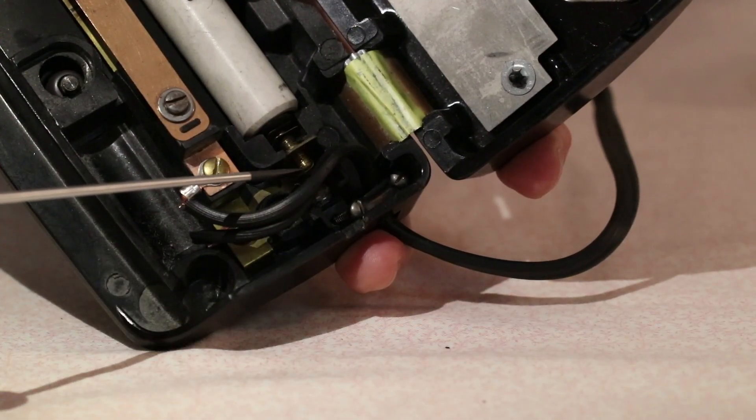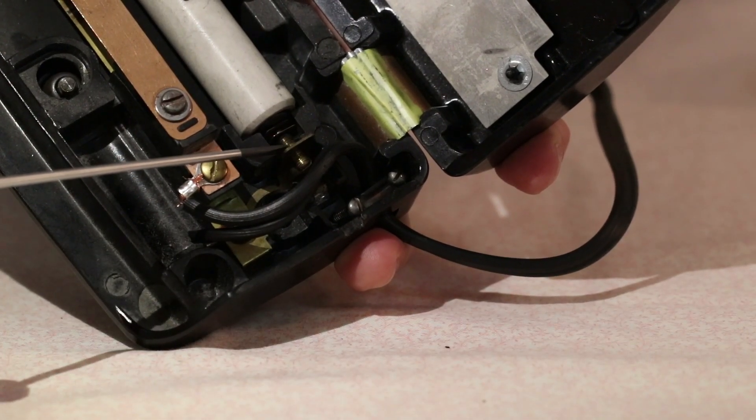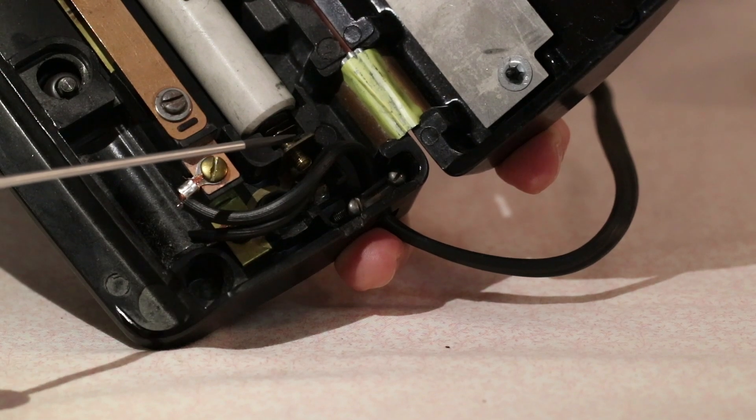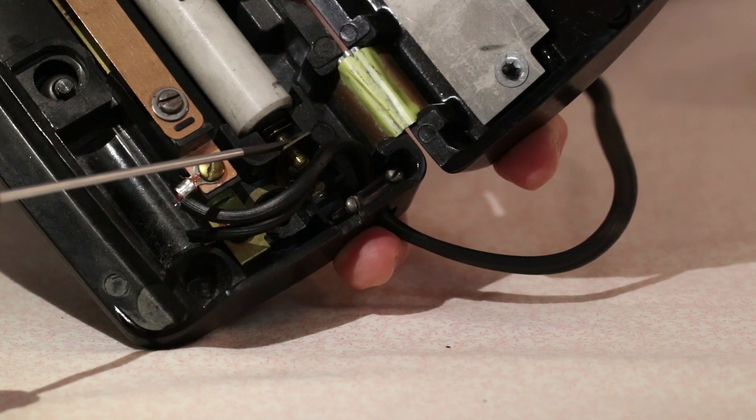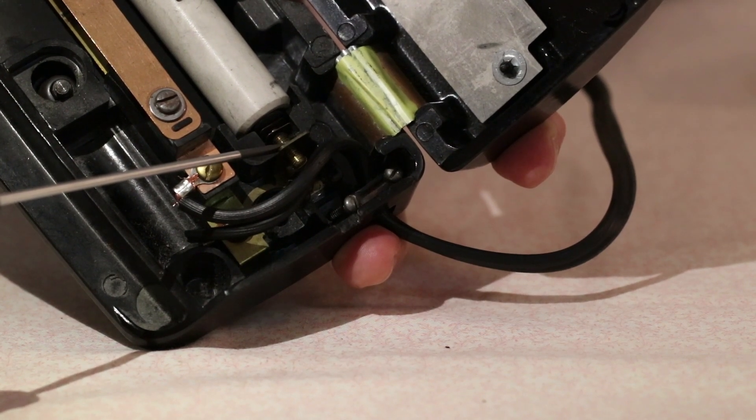So you can see here we've adjusted this screw and so about half of it is showing on this side of the bracket and the other half on the other side of the bracket. And that should be about right for adjustment. So let's test it out now.